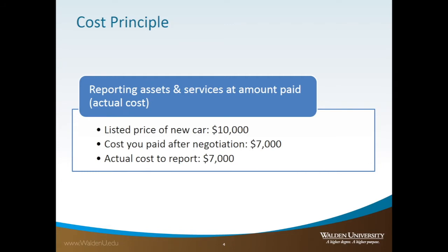For example, assume that you went to a car dealership and saw the price of a Toyota Sienna for ten thousand dollars, but due to your negotiation skills you paid seven thousand dollars. You must report seven thousand, not ten thousand. If you report ten thousand, you have committed fraud or tax evasion, because the three thousand dollars would be posted as an expense, reducing your taxes.